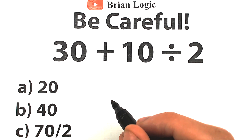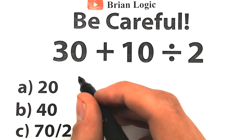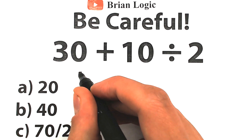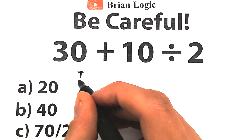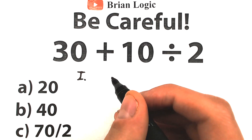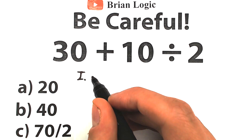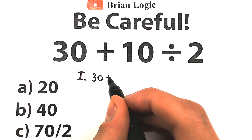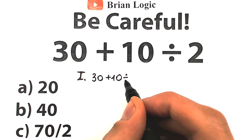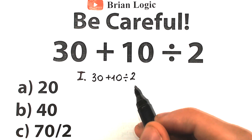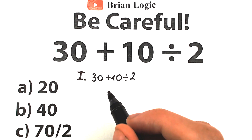First of all, I want to say that there are two types of people in the world. This is our first interpretation, and I'm going to fully explain what the correct interpretation is. So the first interpretation looks like this — one part of people solve this question like that. We have 30 plus 10 divided by 2, and the first type of people solve this question like this.